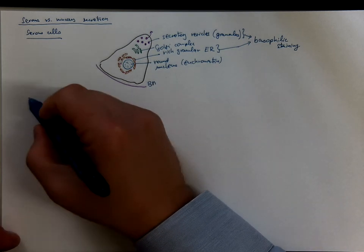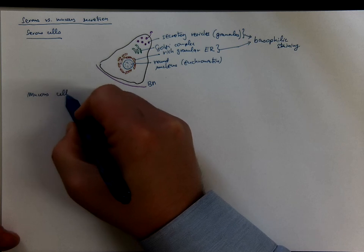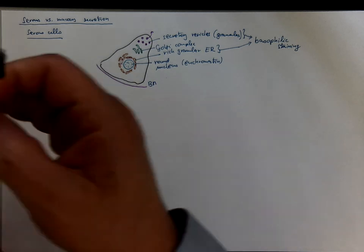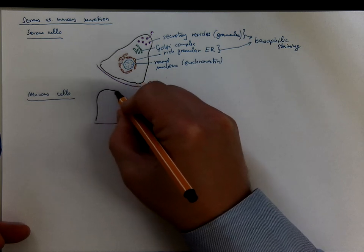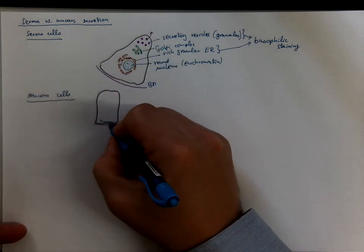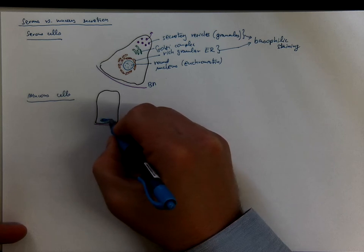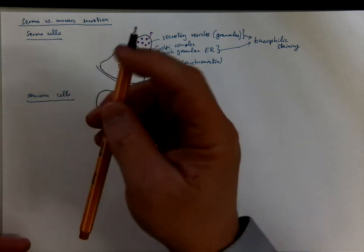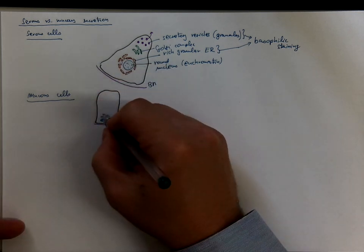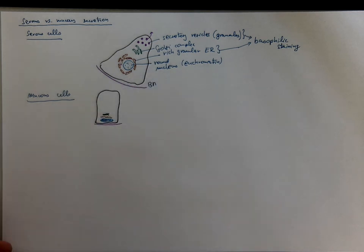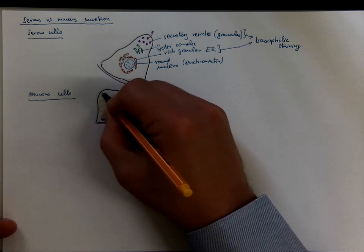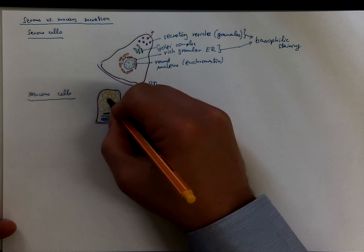Let's compare it with the mucous cells. Mucous cells usually have a columnar shape. The nucleus is compressed in the basal compartment, mostly made of heterochromatin, therefore it's dark. The other organelles are still there, but definitely less developed than in serous cells.